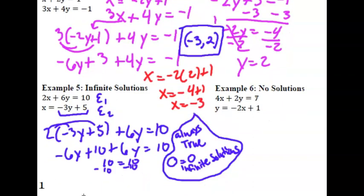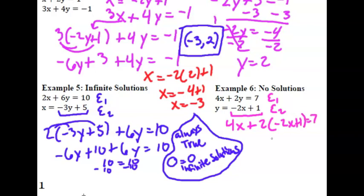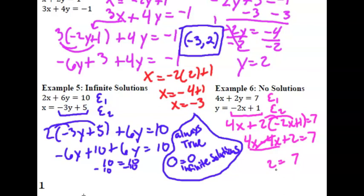Example 6 demonstrates no solution. Wherever we see a y in the first equation, we substitute the expression 2x plus 1. Distributing and combining like terms: we have 4x minus 4x plus 2 equals 7. Those cancel, so we have 2 equals 7. That's never going to be true — 2 is never equal to 7 no matter what x is. So that would be no solution.